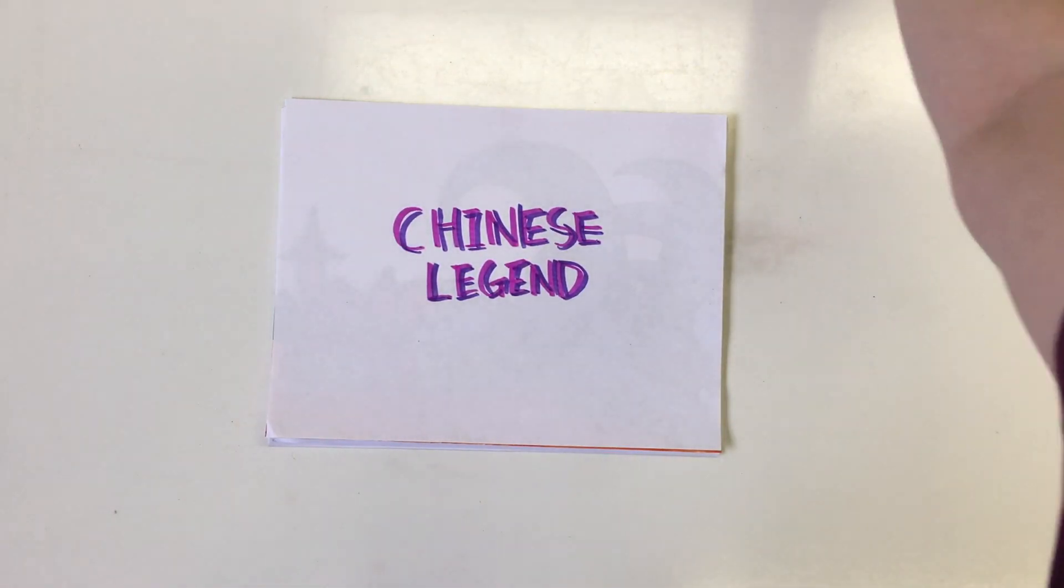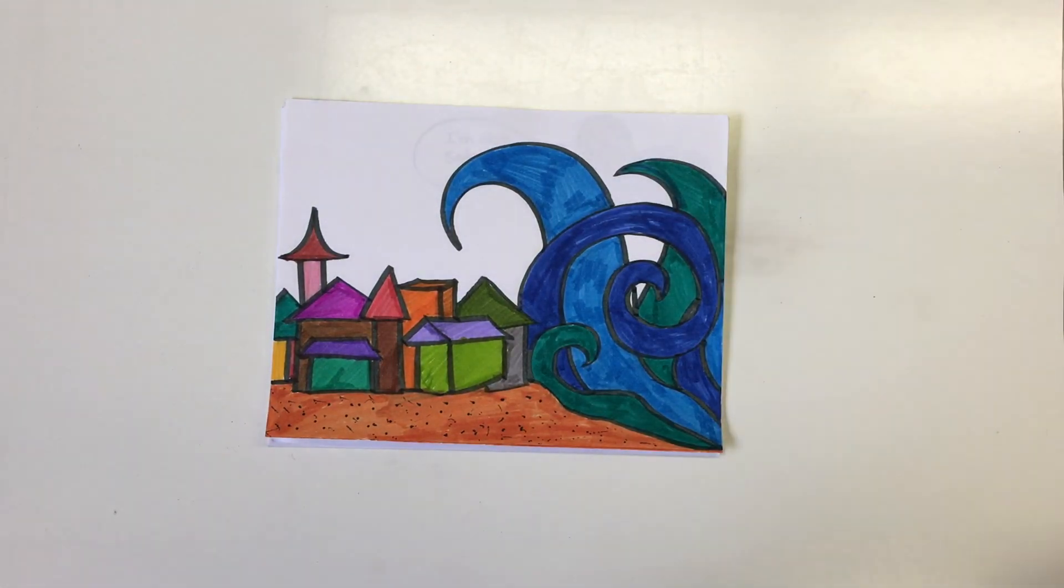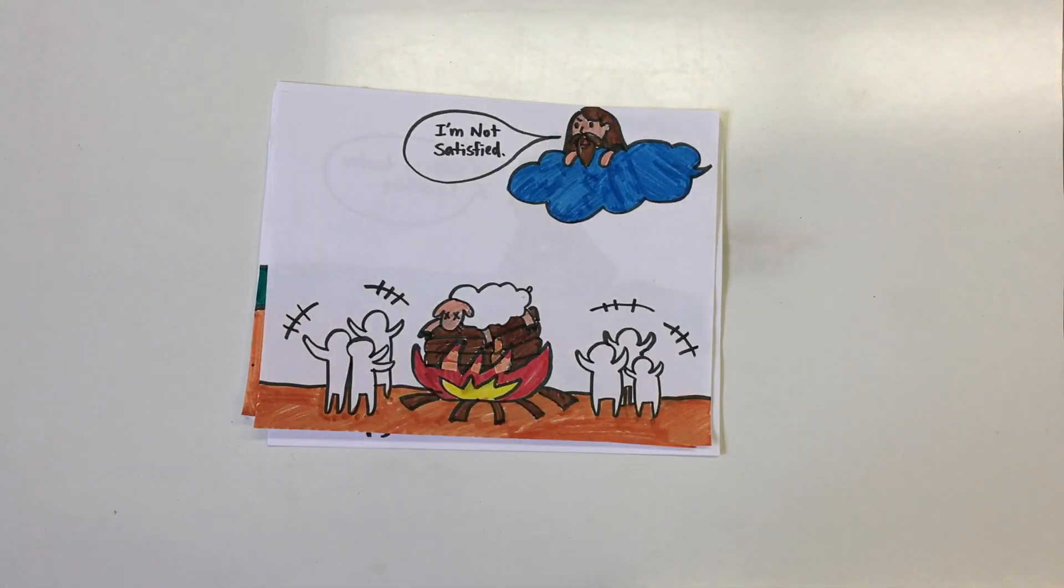An ancient Chinese legend tells the story of a great flood that happened in China many years ago. To appease the god of the river, the people made offerings to the river Lo, but he would not be satisfied.